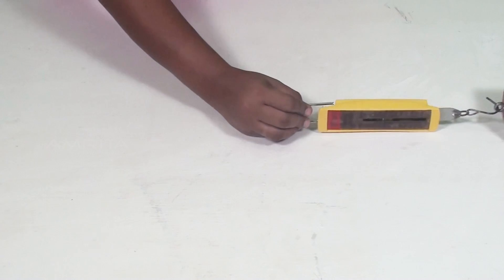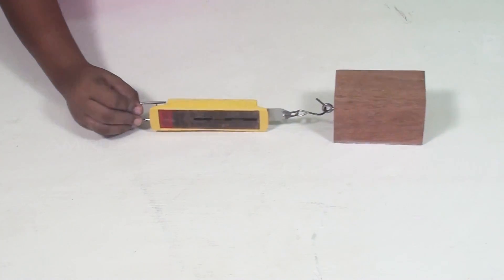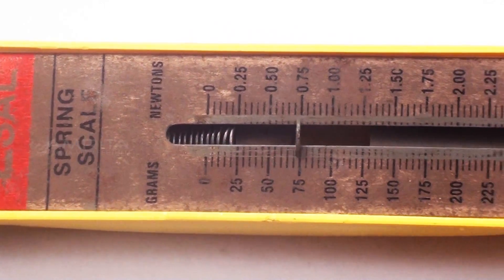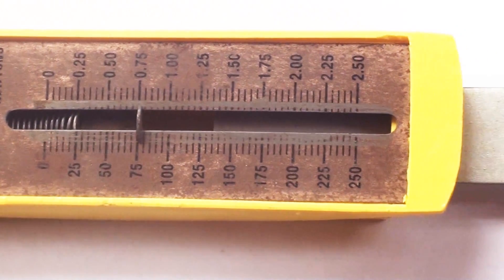As the spring balance is pulled at a particular force, the wooden block just starts to move. Note the force in the spring balance.